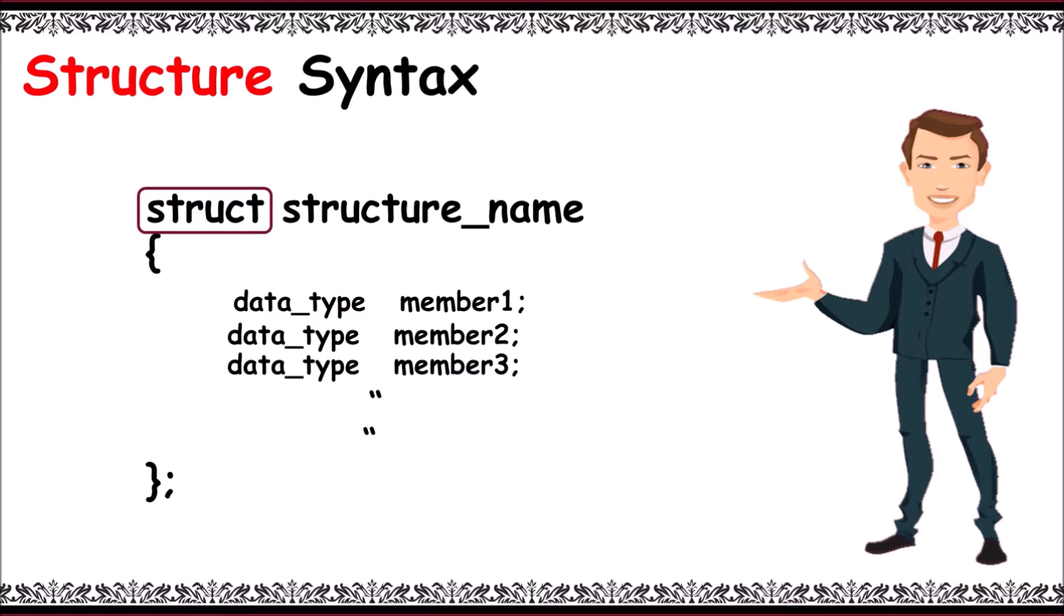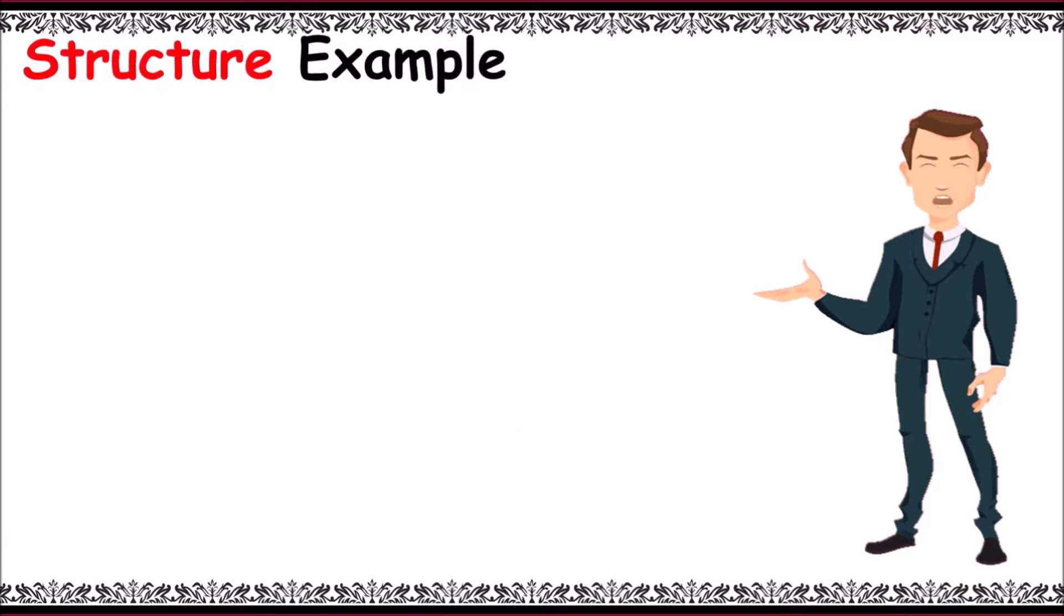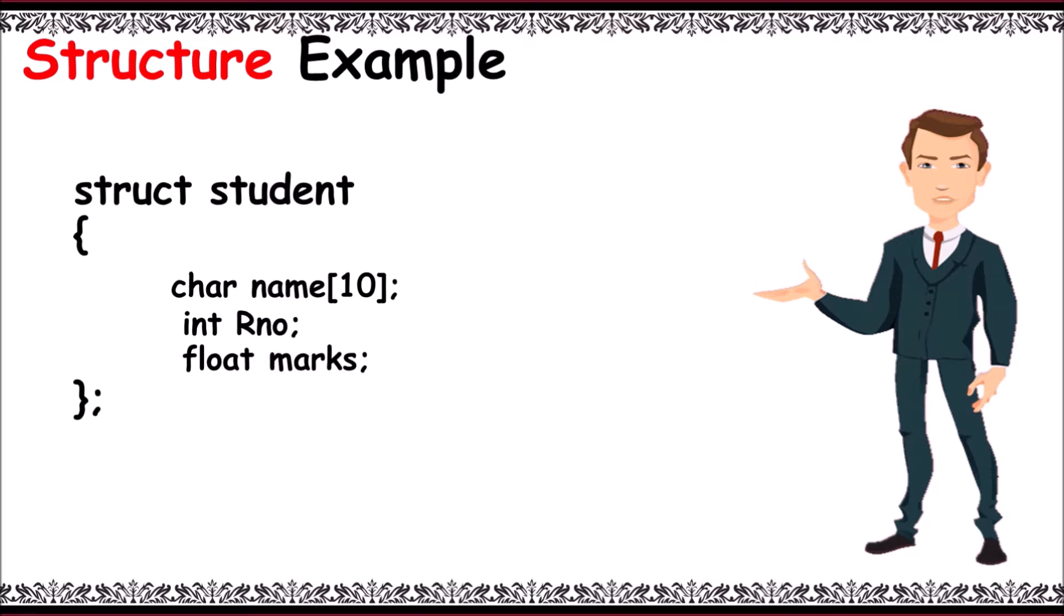Space, structure name, and structure body. The body contains various members of similar or dissimilar data types. Now, structure example: the keyword to declare a structure is struct. The name of the structure is student.